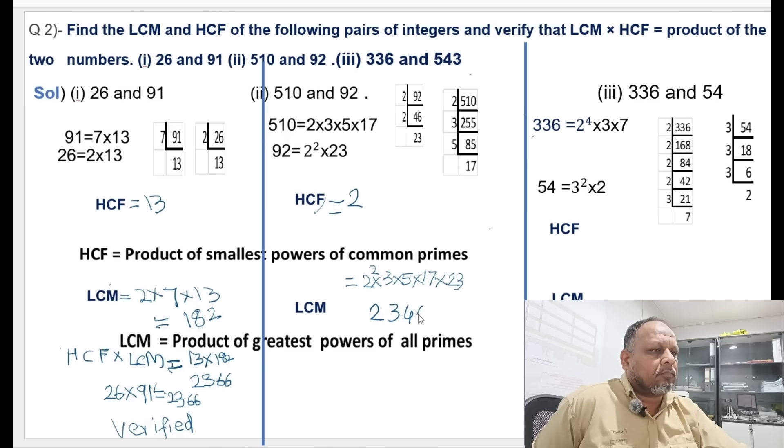Now, verification of the LCM multiplied by HCF equals to 2 into 23,460, which gives us 46,920.